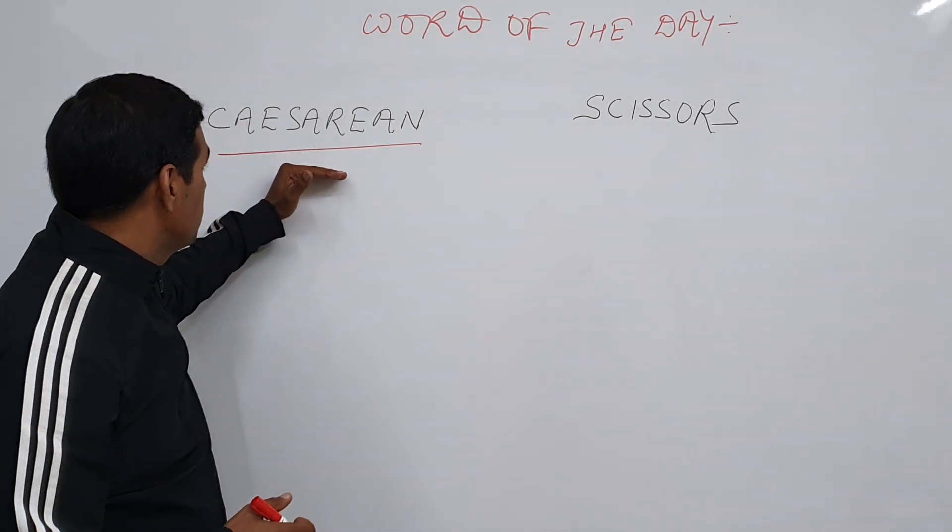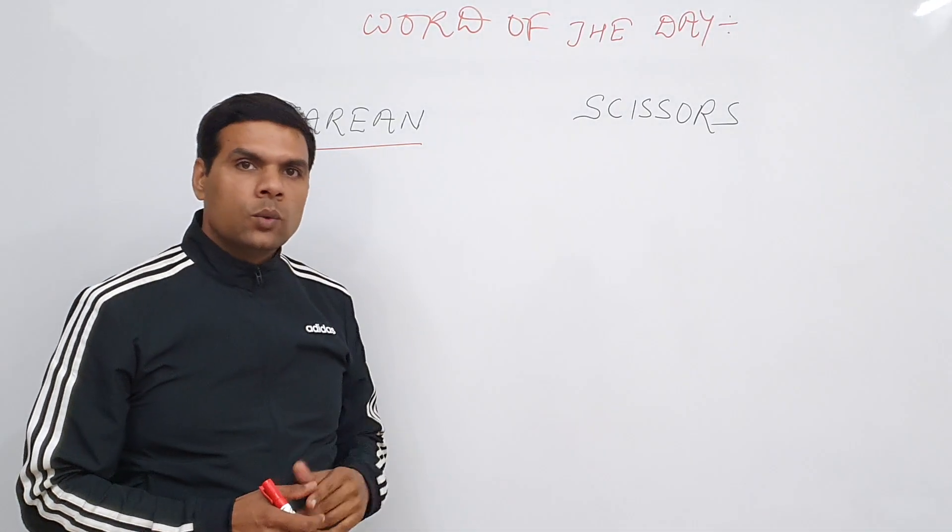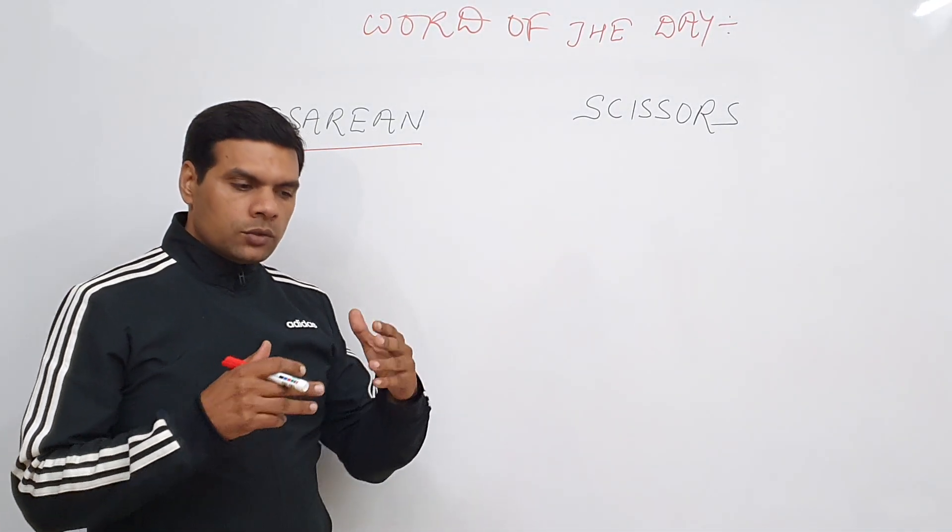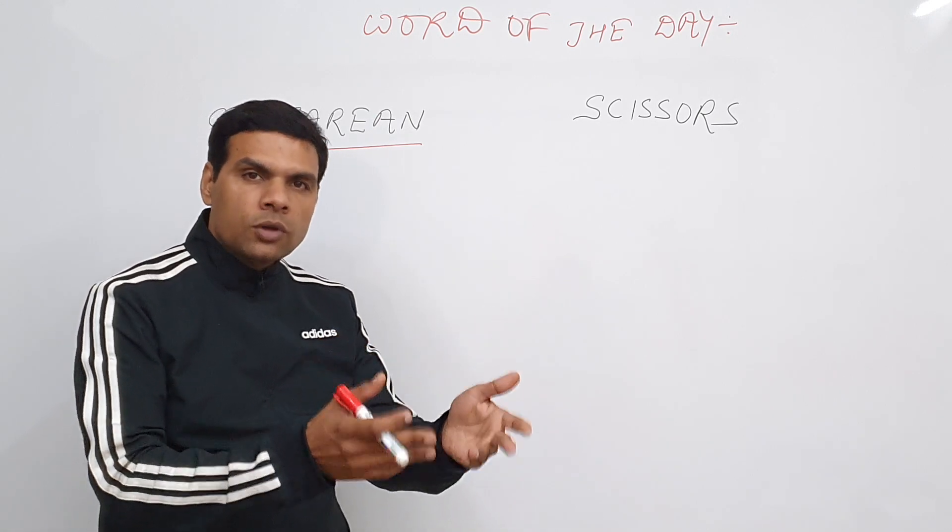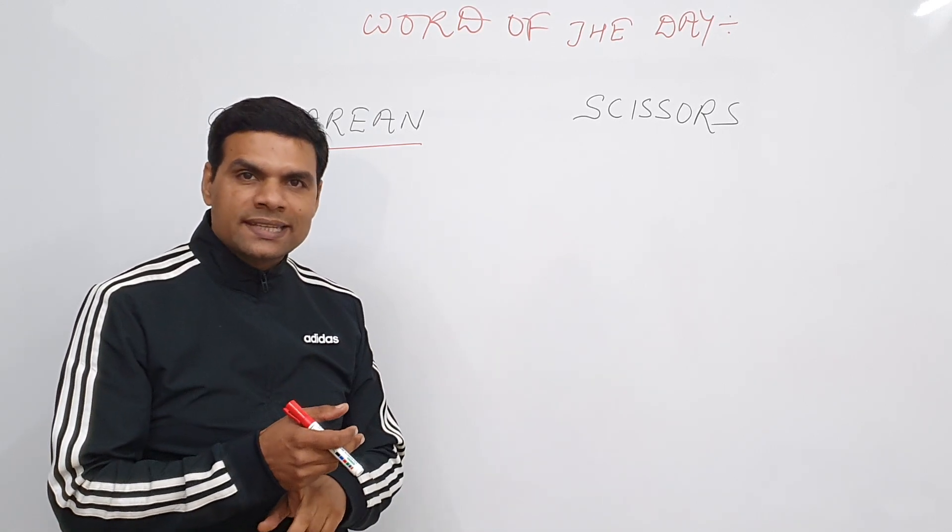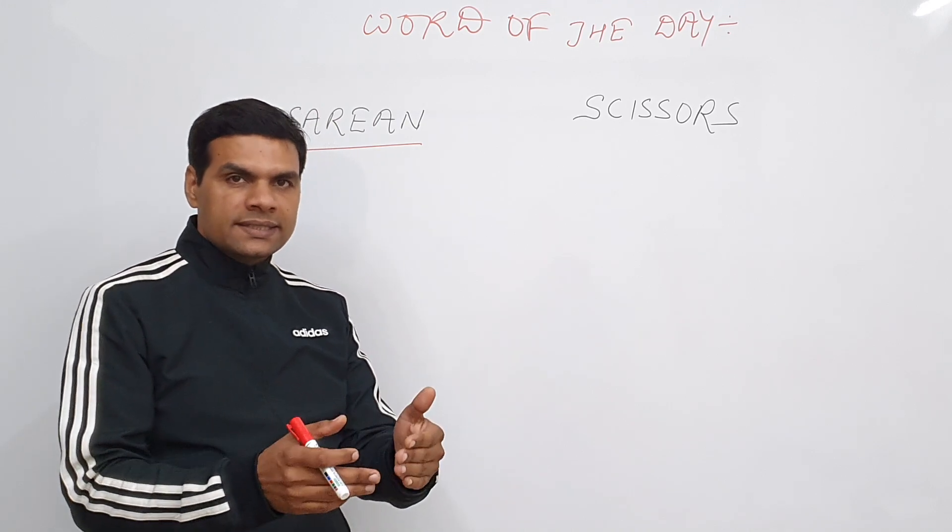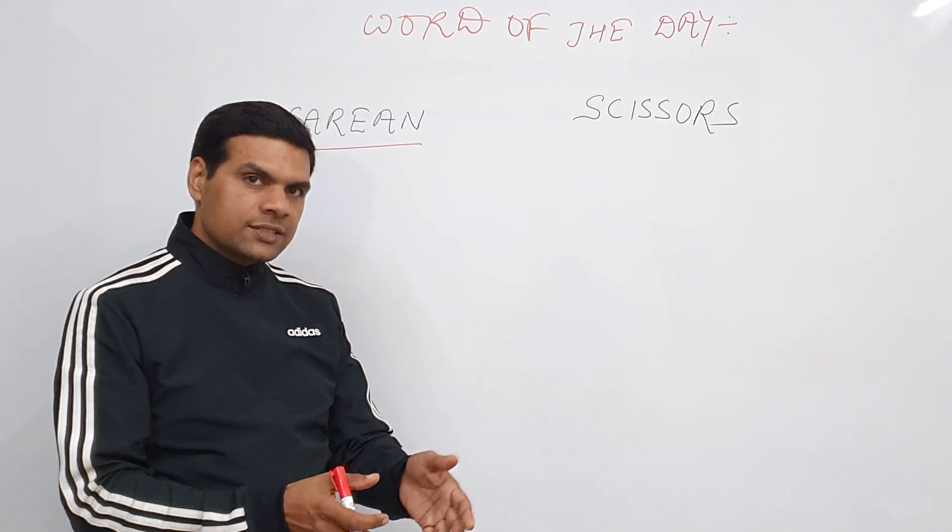First thing first. Caesarean means what? To perform a surgical cut in the stomach to take out the baby which can't be born normally. That is what the word caesarean means. We also call it a caesarean section.